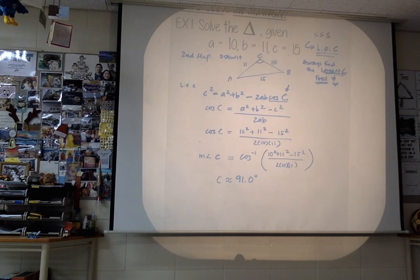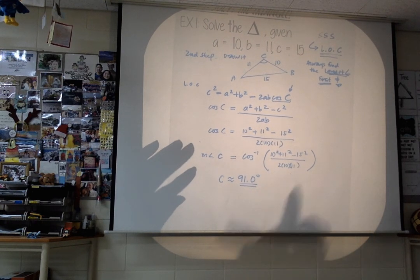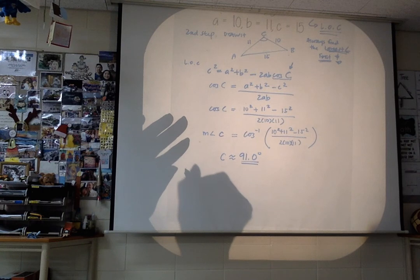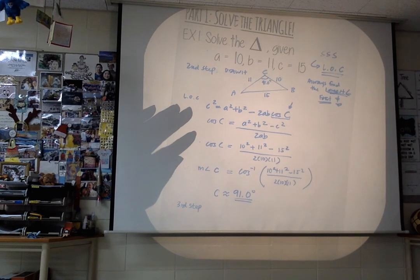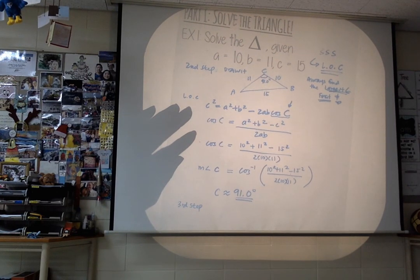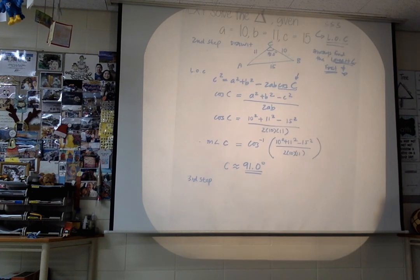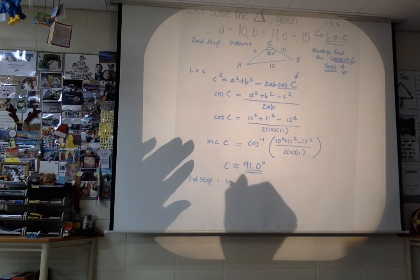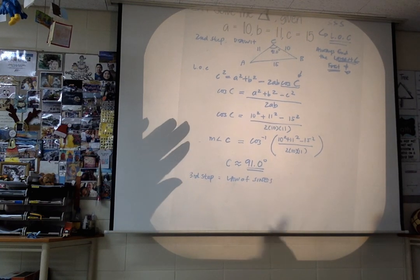Now we have one angle. We've got to find the other angles. Make sure you understand we have to store this — it's an approximate value, so store it. If you don't know how to store it, ask me. Third step: now we know this angle is about 91.0 degrees, so we know side-angle-side. If you know side-angle-side, you can use Law of Cosines, but you can also use Law of Sines now. So now we're going to use Law of Sines, and we can use angle C.